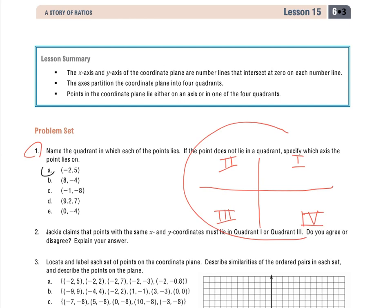So I'll do A, B, and E. Let's look at A, negative 2, 5. If I go to the left 2, because I remember I do my x and then my y, so I'll label that. Here's my x-axis, here's my y.